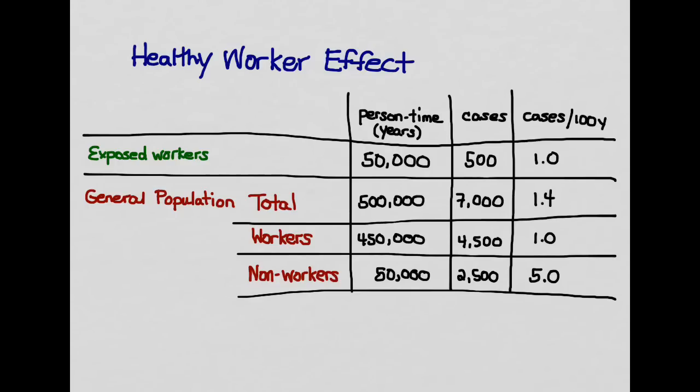So the reason that this occurs is because the general population sample includes both workers and non-workers. And what we see here is that the non-workers have a much higher incidence of the disease than do the workers. And because of that, because the general population sample included both workers and non-workers, this falsely elevated the incidence rate as compared to just looking at workers.